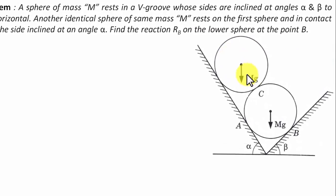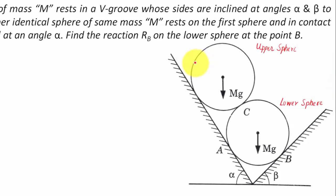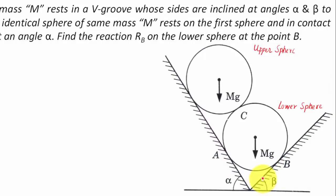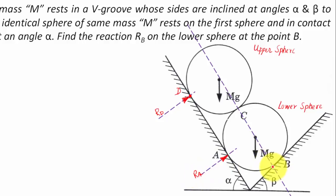Let us try to understand this arrangement. There are two spheres — one is the lower sphere, the other is the upper sphere. Both spheres are placed in a V-groove. This portion is inclined at angle beta and this portion is inclined at angle alpha. The contact points are labeled A, B, C, and D. There is a reaction RD offered normally from surface D, a reaction RA normal to surface A, and a reaction RB normal from this side.